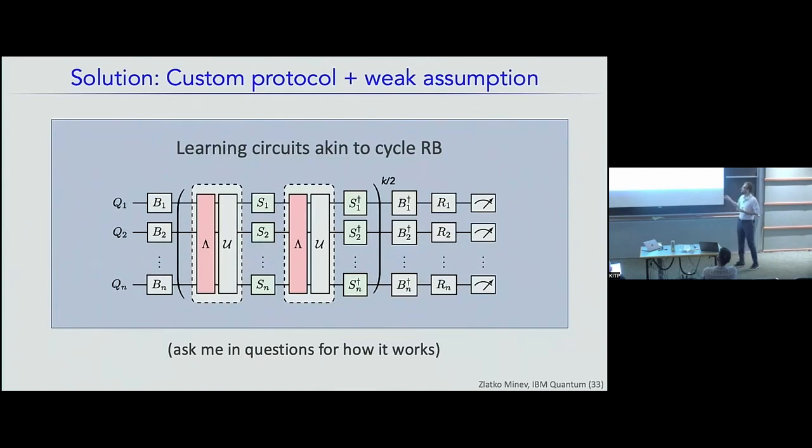I'm going to skip over that, although that was really the largest part of the project and the largest amount of time to figure out exactly how to do this. If you're interested, ask me in the question period. Let's just say that we developed some kind of custom protocol that's akin to cycle RB with some weak assumptions where you take a gate repeated many times and you can essentially extract all the parameters and more or less get away from this no-go theorem.